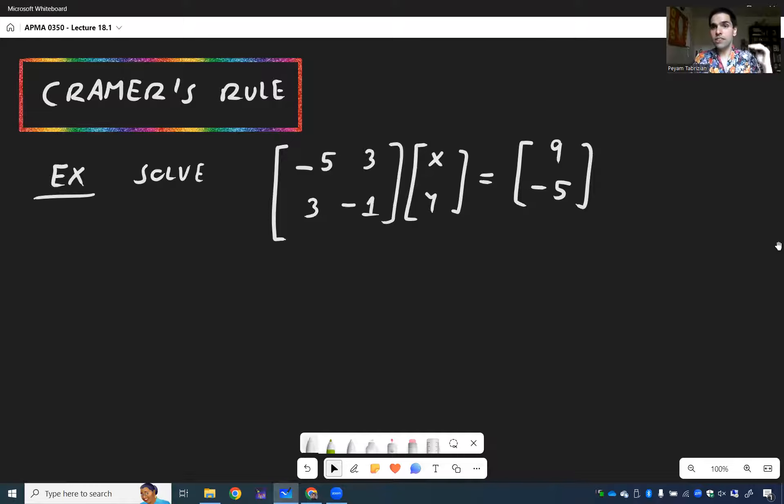The first one is a very systematic way of solving linear equations, which is called Cramer's rule. So let's solve -5x + 3y = 9 and 3x - y = -5. But I just wrote it in matrix form.